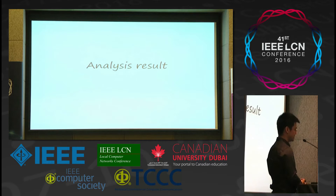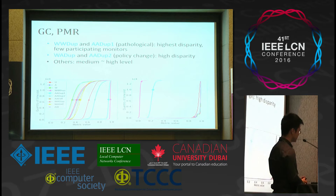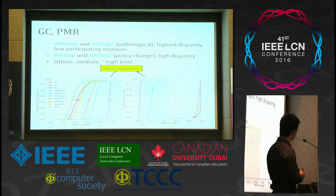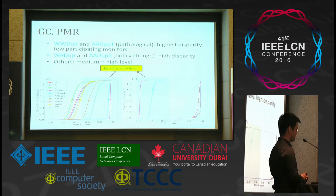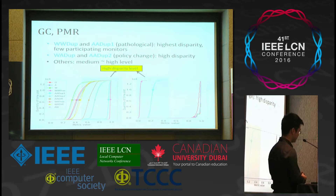Now we turn to the analysis results. The Gini coefficient is shown on the left and the PMR on the right. We can see that WWDUP and ADUP1, which are both pathological behaviors, have the highest disparity, with few participating monitors. The high disparity level includes the largest portion of all the curves. We can also see that WWDUP and ADUP2, which indicate policy changes, also have high disparity — shown as the green and brown curves on the left. Other features stand in the medium to high levels.